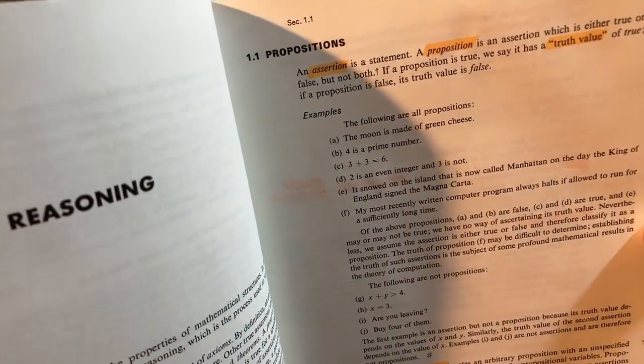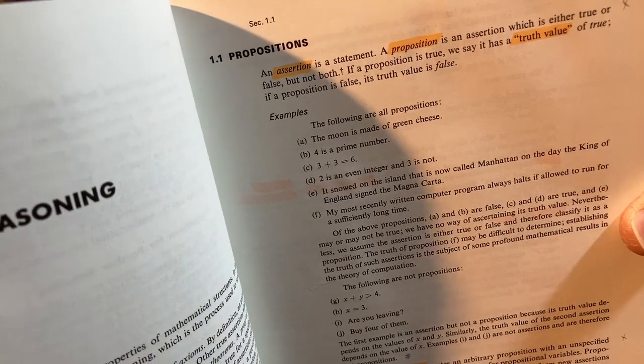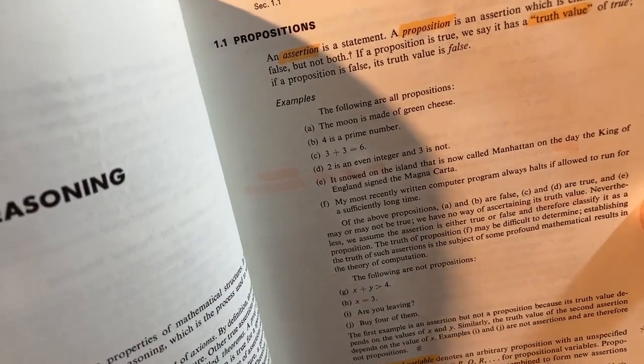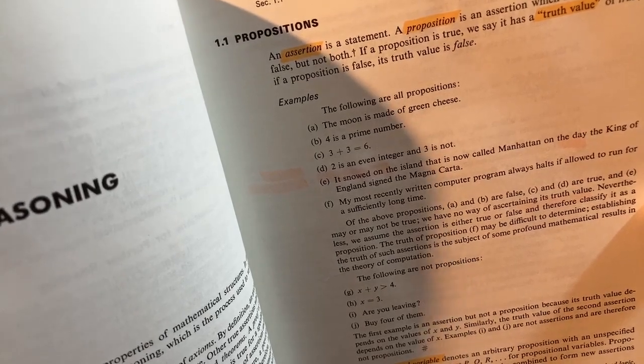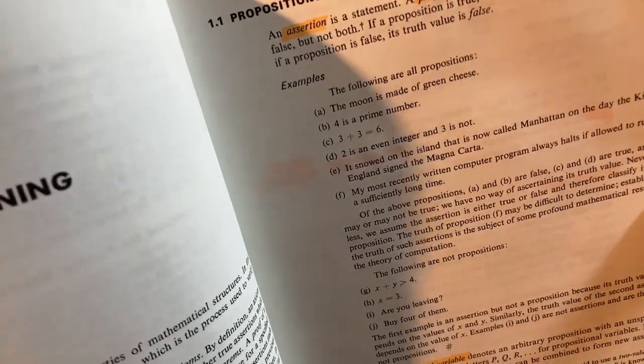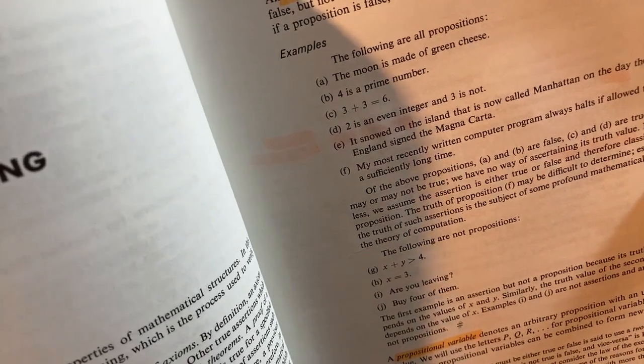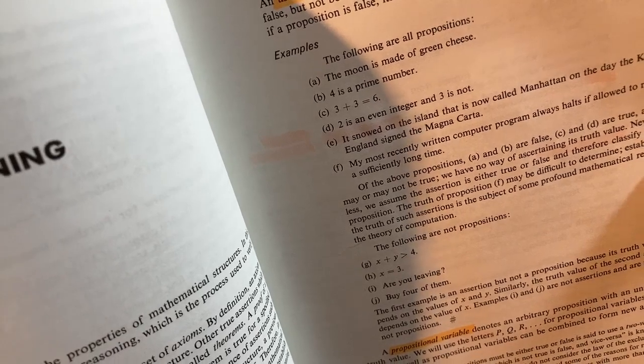Mathematics is the study of the properties of mathematical structures. In this chapter, we will study mathematical reasoning, which is the process used to verify these properties. Propositions. An assertion is a statement. A proposition is an assertion which is either true or false, but not both. If a proposition is true, we say it has a truth value of true. If a proposition is false, its truth value is false. The following are all propositions: the moon is made of green cheese, four is a prime number. Some of them are true, some are false. Four is not a prime number.